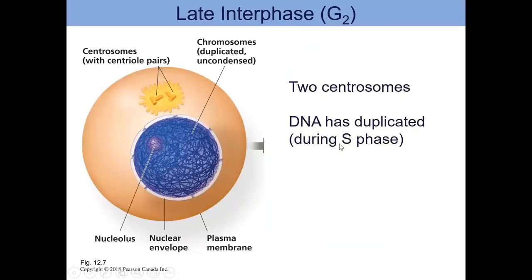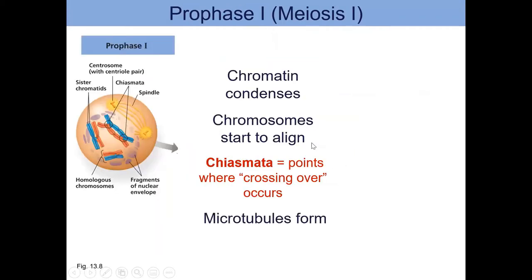Here's interphase — the same photo as before, where we have a cell with replicated DNA. The centrosomes have also replicated and chromosomes are about to start thickening. Meiosis I has four stages: prophase I, metaphase I, anaphase I, and telophase I. In prophase I we have condensing of the chromosomes, the nuclear membrane disappears, and microtubules start to form. In late prophase or prometaphase, microtubules start attaching at the centromeres.